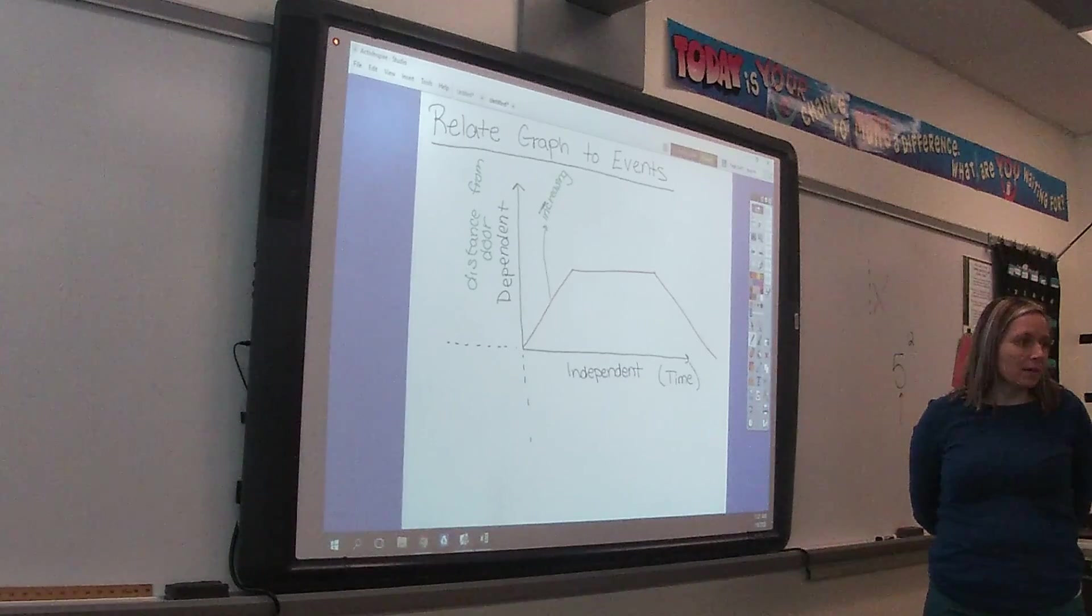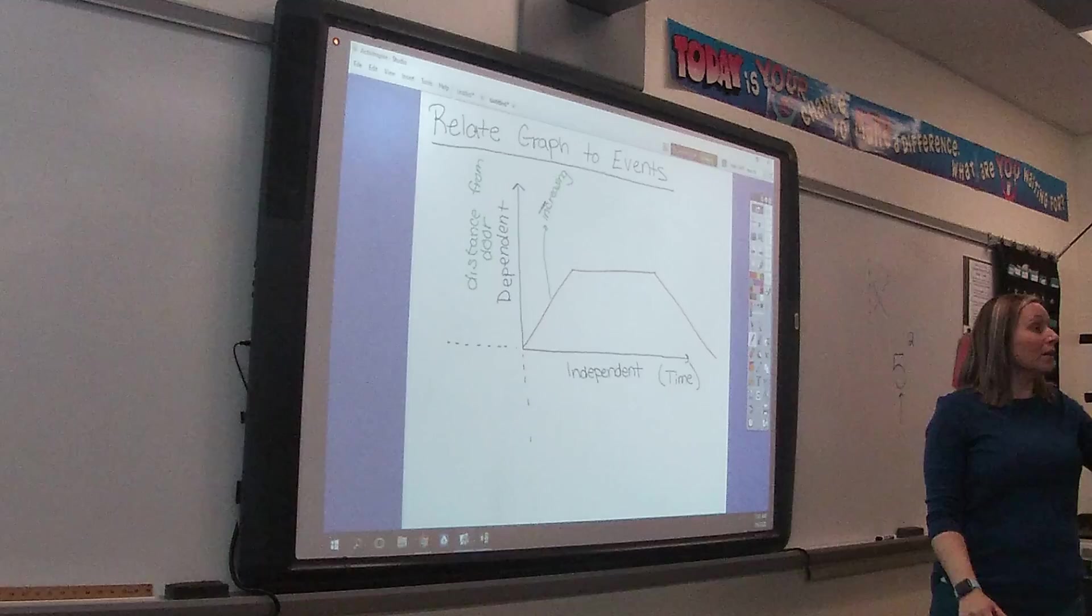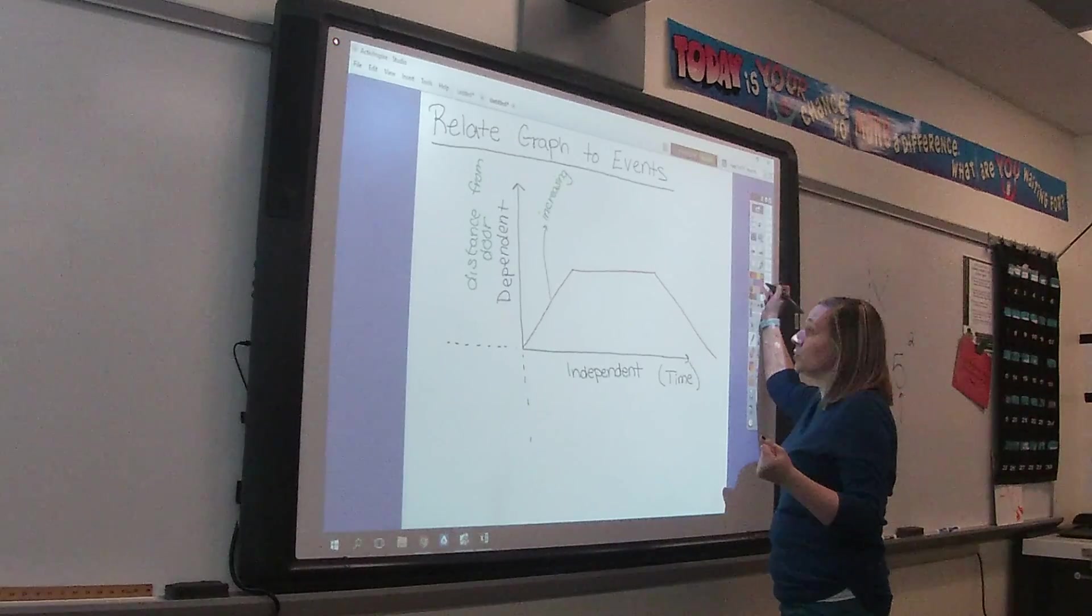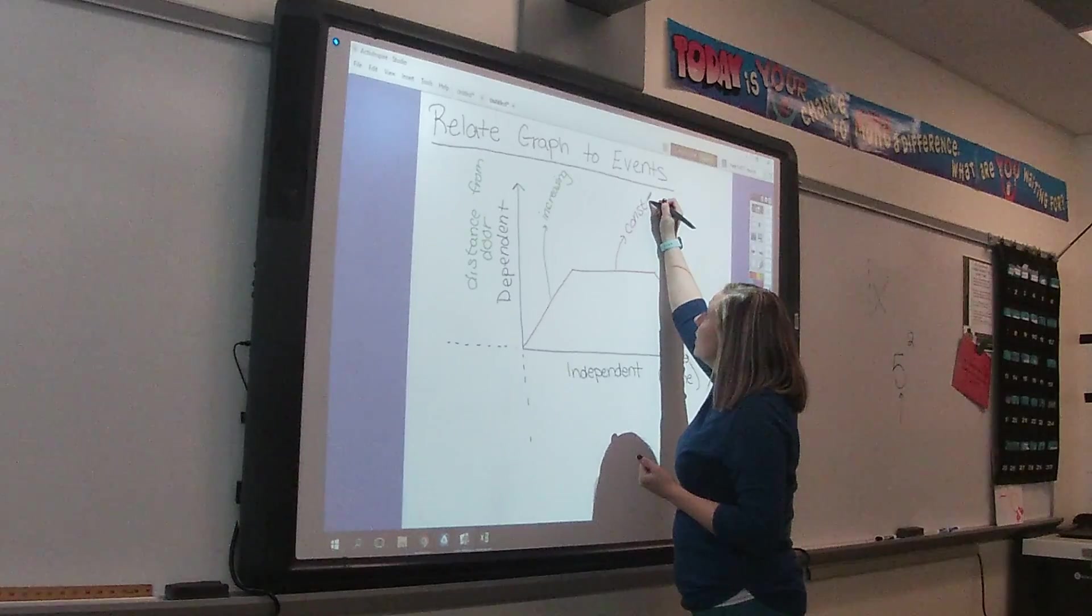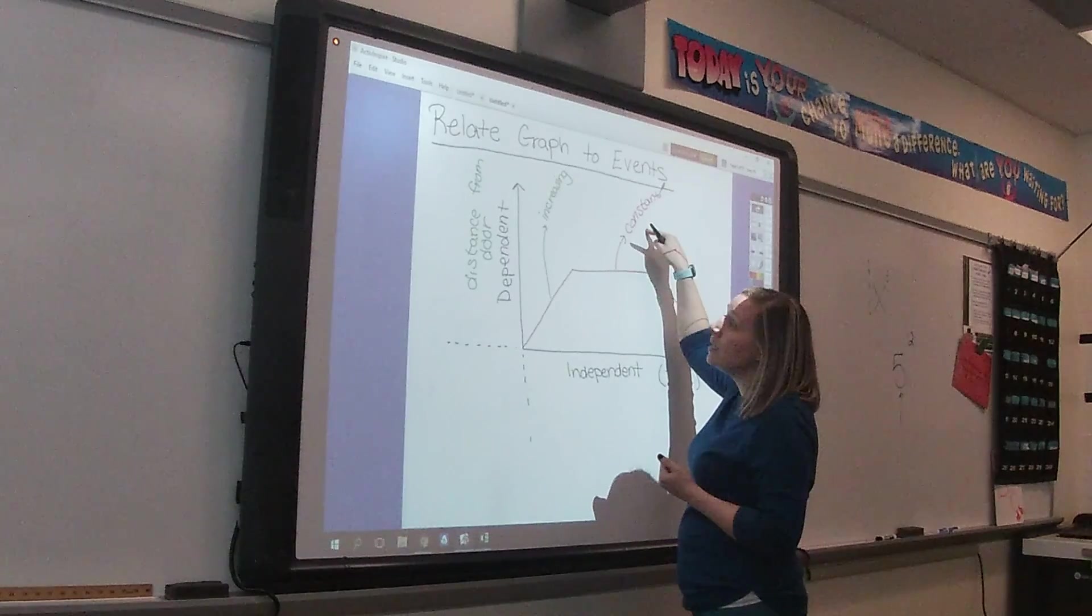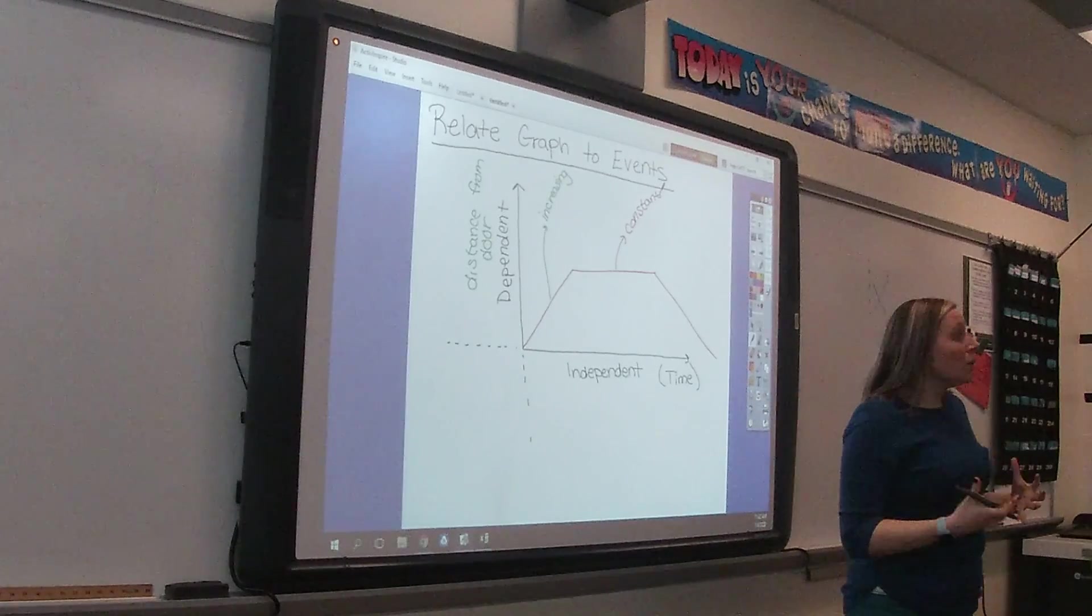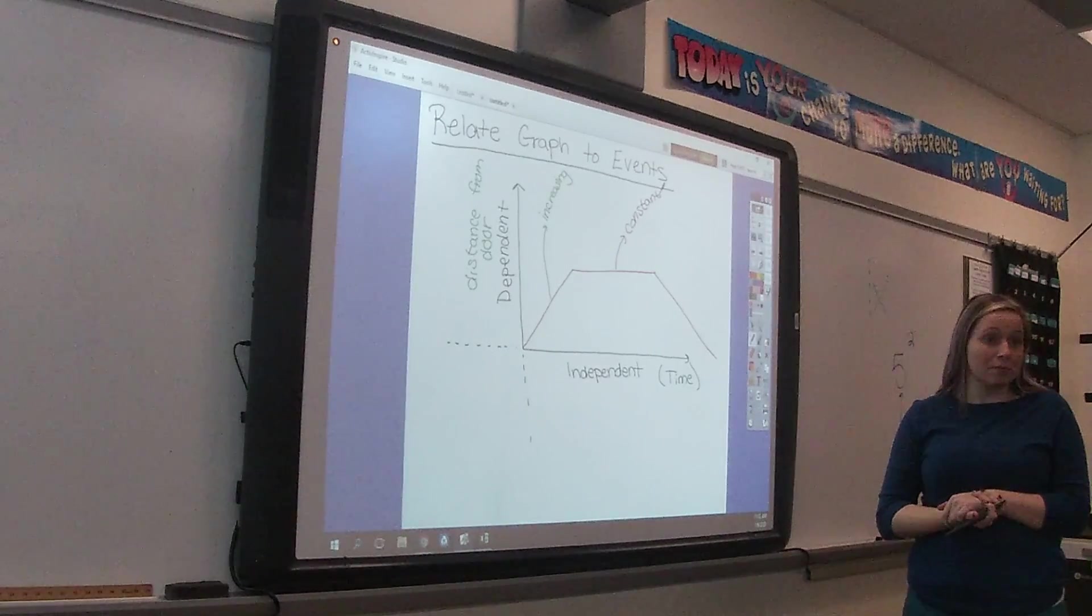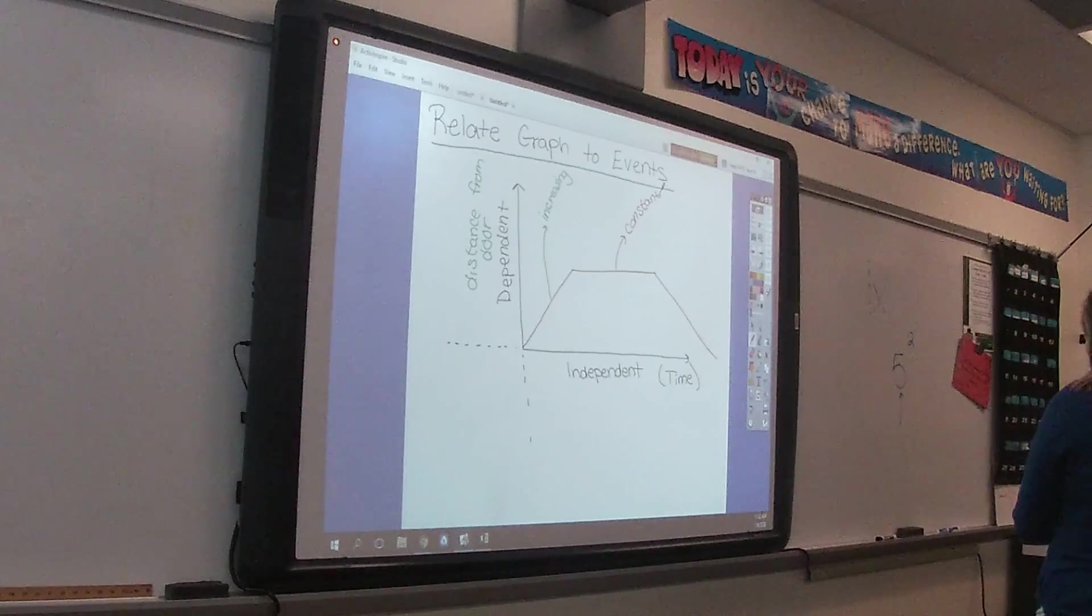So I'm increasing my distance from the door. Then what happens? And what does it mean when the graph levels out? Constant. Constant is the word that we can use. So the only word we can use for this portion is constant. I am a constant distance from the door. Now, it is reasonable to assume I probably stopped, right?